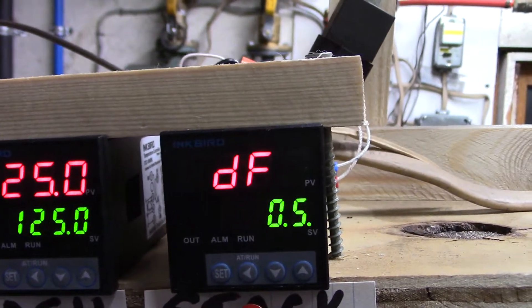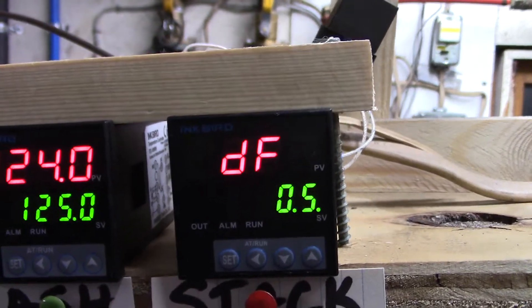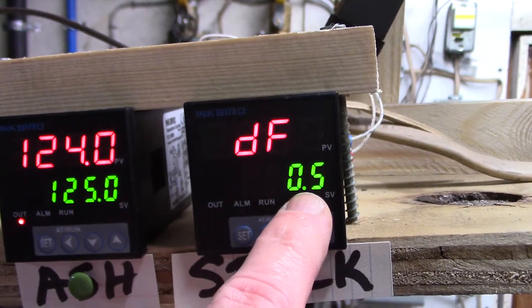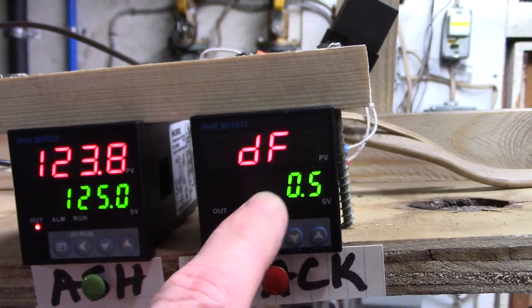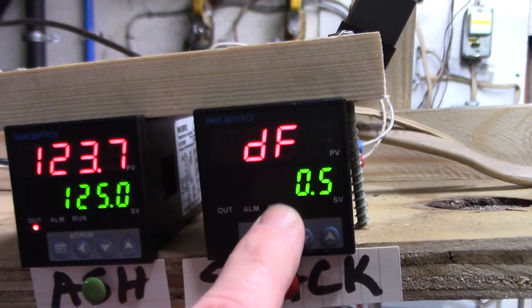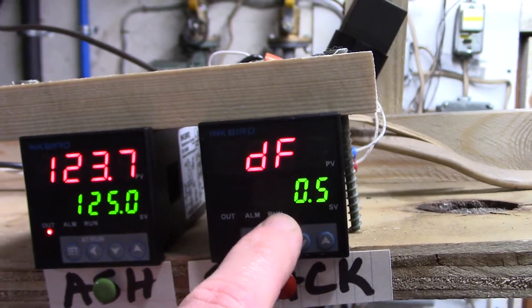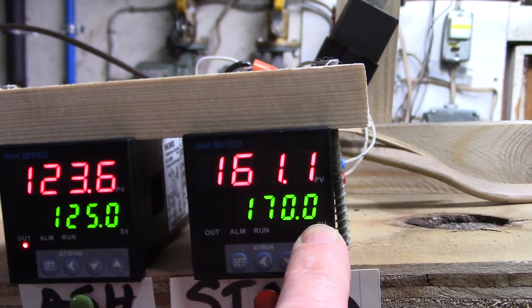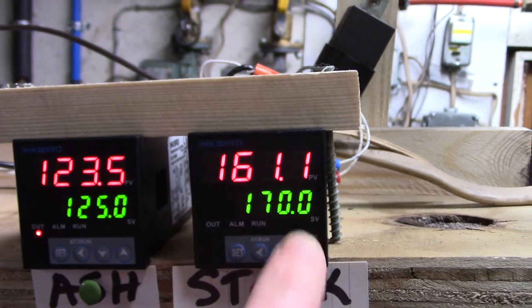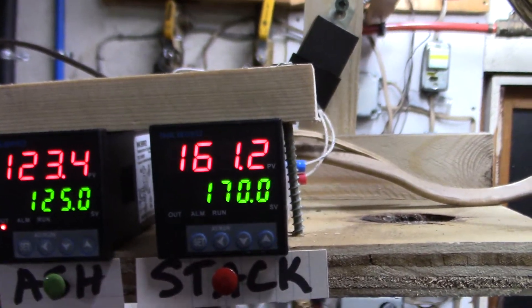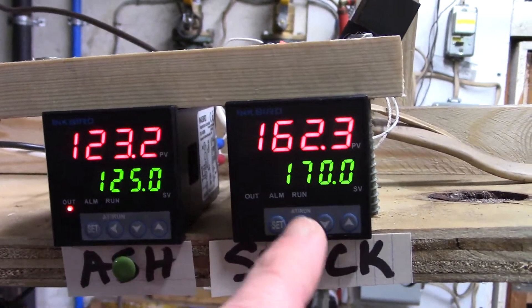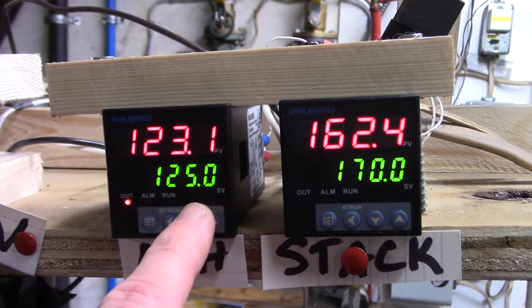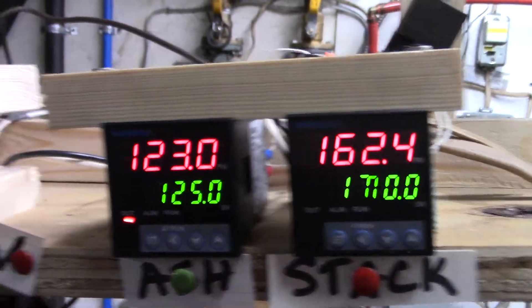We have this set at 0.5. From the factory they come at 0.3, and that is the hysteresis effectively, it's the differential. It's like how far it will go before it actually does anything. So with it at 0.5 and having a set point at 170 degrees, really it'll activate when it gets to 170.5 degrees.